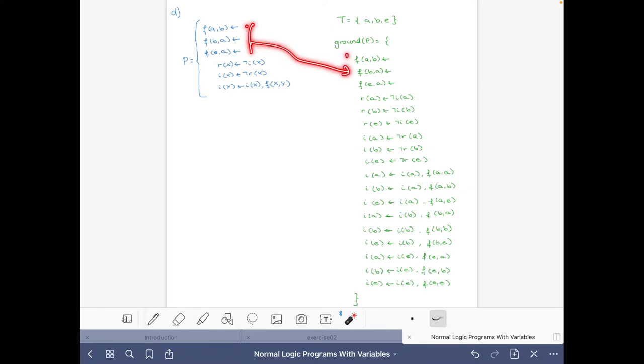So these facts we just copy them. Then this rule has variable x and we have to replace it by its element of the Herbrand universe, and this leads us to these three rules. Something similar happens with the next rule. Now this has two variables x, y, so we have to replace them by a, a, then by a, b, a, e and so on, and this gives us these nine instances.